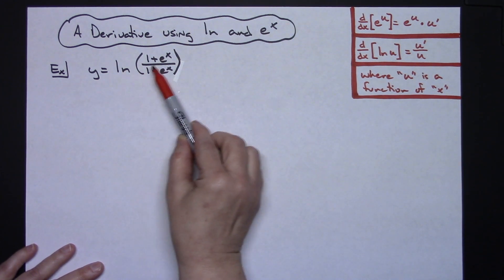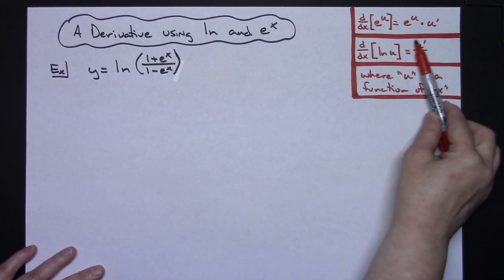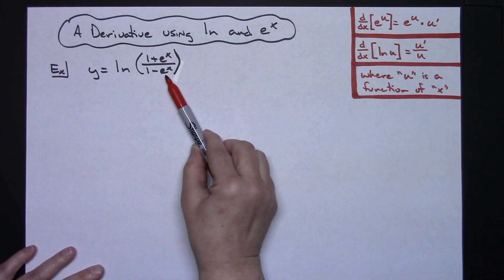So technically I've got the natural log of a u here and I could just go ahead and do u prime over u. However, looking at what that u is, that's a quotient. So I would have to do a quotient rule and that would end up being very complicated.